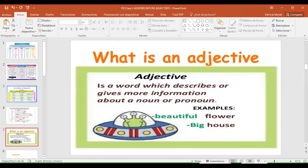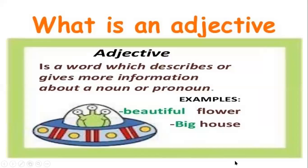Now I want you to remember the definition of an adjective, because if we are going to talk about adverbs before adjectives, we need to know both. An adjective is a word that describes or gives more information about a noun or a pronoun. For example, 'beautiful flower' — the adjective is 'beautiful' and the noun is 'flower.' 'Big house' — the adjective is 'big' and the noun is 'house.'